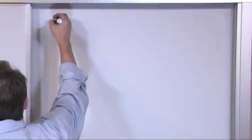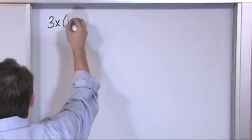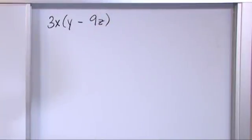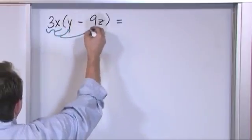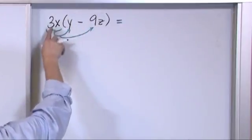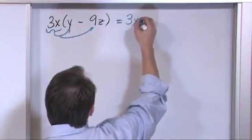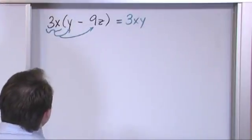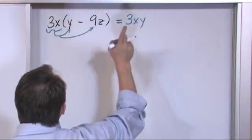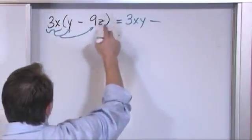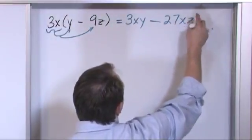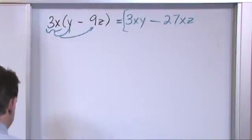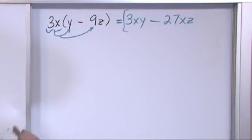Let's mix it up with different kinds of variables: 3x times (y minus 9z). It's going to be exactly the same thing. We distribute 3x in here and in here. Three x times y is just written as 3·x·y — there's nothing more you can do because these are different variables. Then minus: three times nine is twenty-seven, and x times z gives xz. The answer is 3xy minus 27xz.